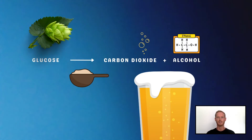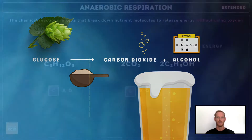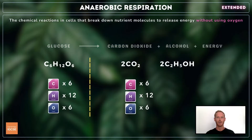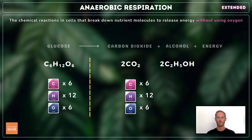The balanced chemical equation for anaerobic respiration in yeast, which you only need to know for extended, is: C6H12O6 produces 2C2H5OH (2 alcohol molecules) and 2CO2.